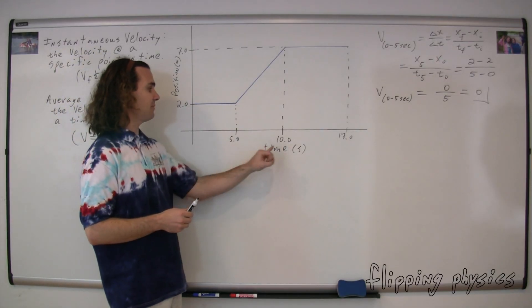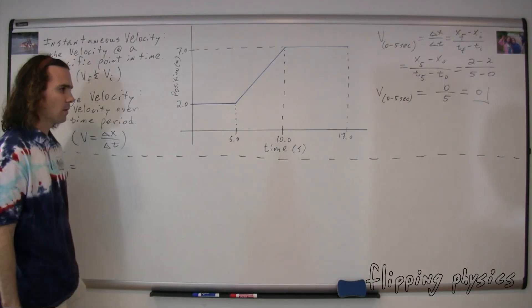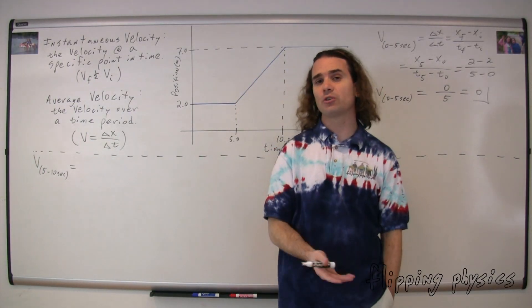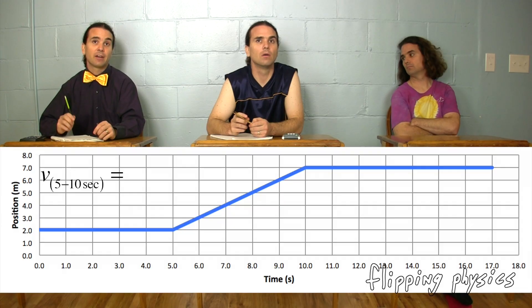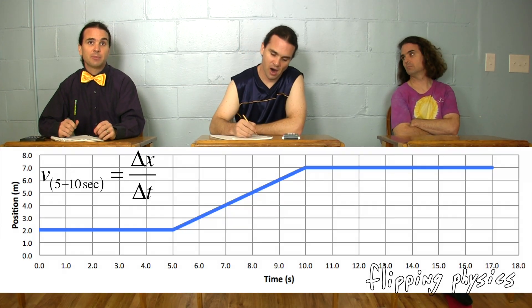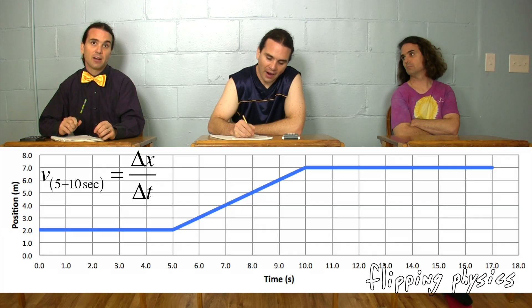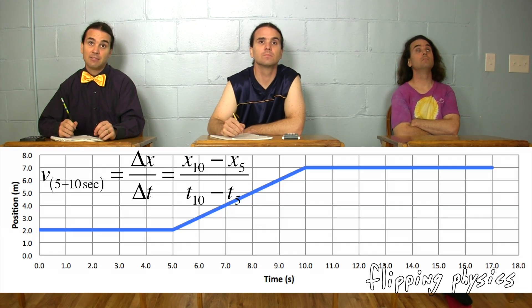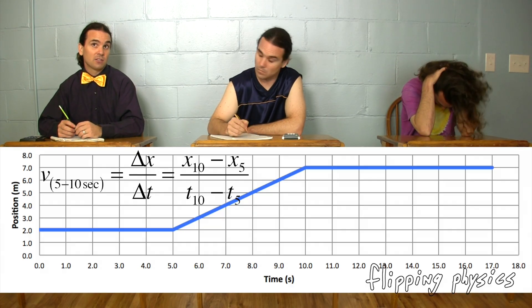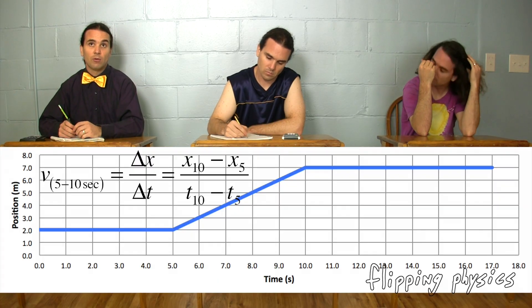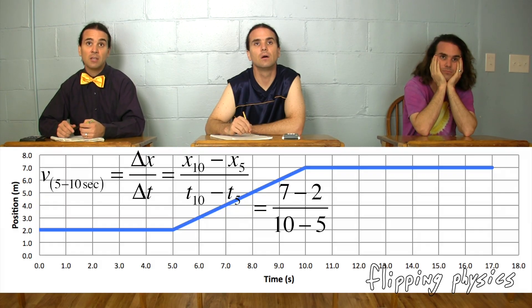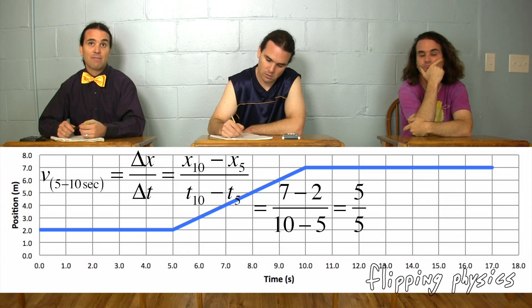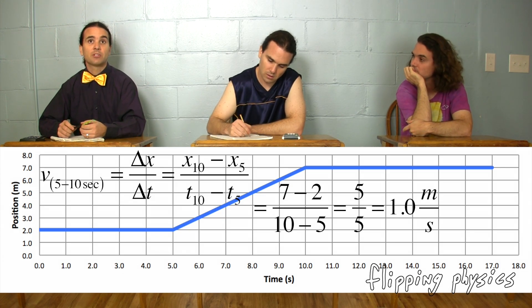Let's look at the velocity from five to ten seconds. Could you please figure out the velocity from five to ten seconds, and tell me whether you're figuring out an instantaneous or average velocity? Five to ten seconds is a time duration, so you're asking for an average velocity. We use the equation velocity equals change in position over change in time. The final is at ten seconds and the initial is at five seconds. Reading the numbers off the graph: the position at ten seconds is seven meters minus the position at five seconds, which is two meters, divided by ten seconds minus five seconds. We get five over five, which is 1.0 meters per second. The average velocity from five to ten seconds is 1.0 meters per second.